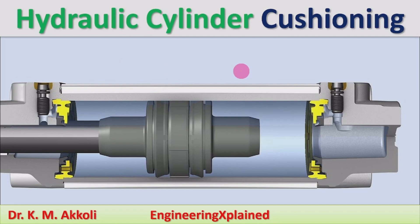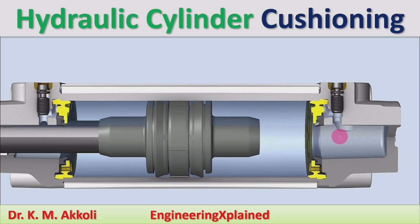In hydraulic cylinders, particularly in double acting cylinders, when the piston is moving inside the cylinder at the end, if it is moving with full speed there is an impact force on the cylinder heads. In order to avoid that impact force at the cylinder head, a cylinder cushioning arrangement is provided, and that will reduce the damages to the cylinder heads, thereby making operation smooth. Here I am going to discuss how that cushioning is provided to these hydraulic cylinders.